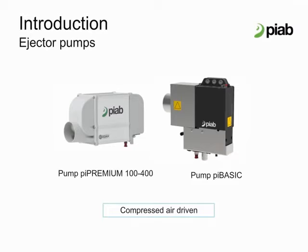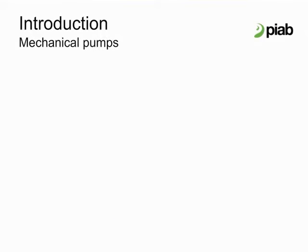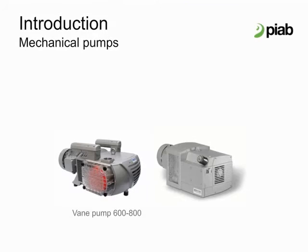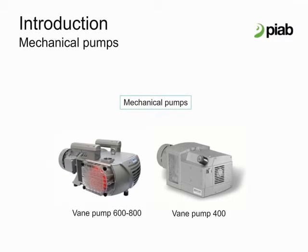Both pumps use our coax cartridge technology to produce vacuum flow and are modular when it comes to increasing or decreasing the vacuum flow. For applications where compressed air is at a premium, we can offer mechanical vane pumps as an alternative solution. Vane pumps are sized equivalently to our full line of ejector pumps, ensuring the performance of the PIAB vacuum conveyor regardless of vacuum generator used.